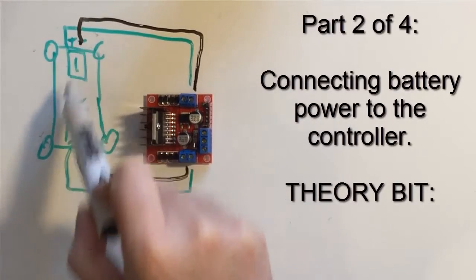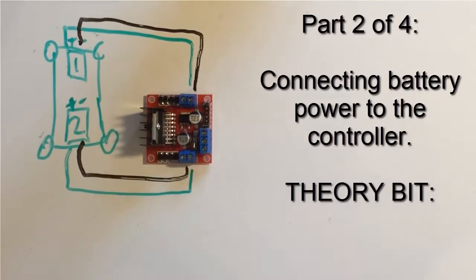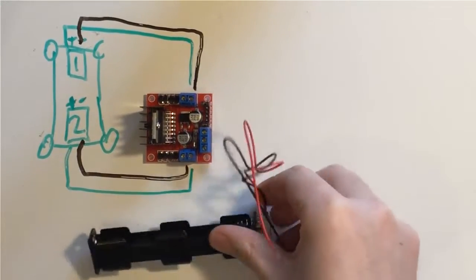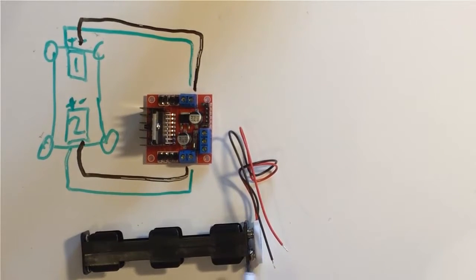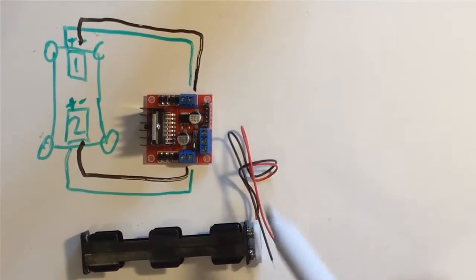These guys are going to need some electricity. Where you put your power supply into this motor controller is you use a battery pack. Now you might have a remote control car that's actually got one of these at the bottom, in which case you don't need this at all, you just need to define the two wires coming out of it.